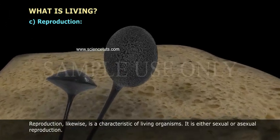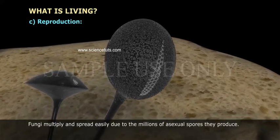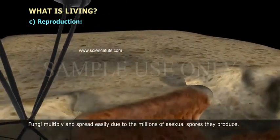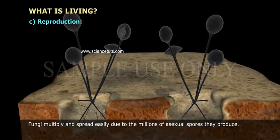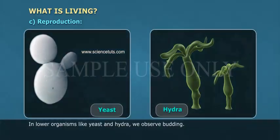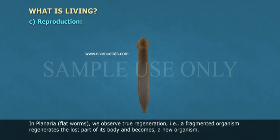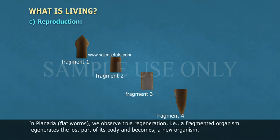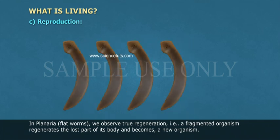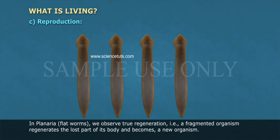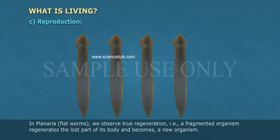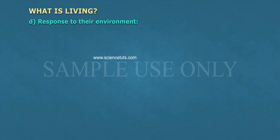Reproduction: reproduction is a characteristic of living organisms. It is either sexual or asexual. Fungi multiply and spread easily due to the millions of asexual spores they produce. In lower organisms like yeast and hydra, we observe budding. In planaria (flatworms), we observe true regeneration — a fragmented organism regenerates the lost part of its body and becomes a new organism.